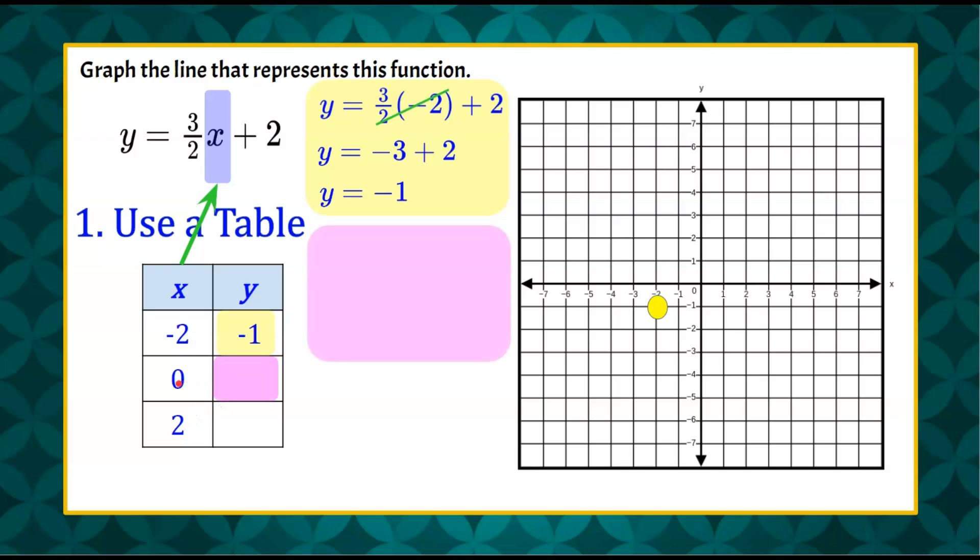We're going to put 0 in for x. Let's write that down. Replace x with 0. Any value multiplied by 0 is 0. Then we've got to add our 2. 0 add 2 is 2. So when x has a value of 0, y is 2. Now we have another ordered pair. 0, 2. Graph our point.